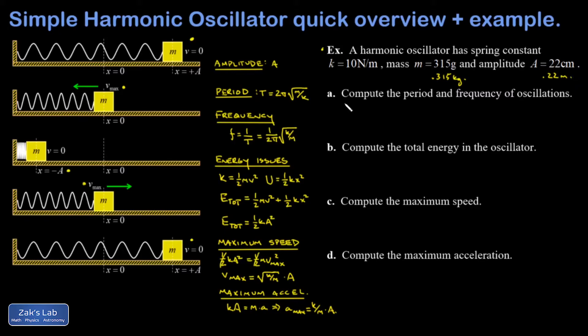In part A I'm asked to get the period and frequency of the oscillations, so just plug into the formulas. Period is 2π root m over k, so 2π root 0.315 over 10, and I get 1.12 seconds for that. Frequency I could just say 1 over the numerical value of period that I just got, but I'll go ahead and plug into the formula just for practice: 1 over 2π root k over m, and I get 0.897. Now what are the units of frequency? If frequency is the reciprocal of period, the units must be 1 over seconds, in other words oscillations per second, but there's a special name for that: that's a hertz.